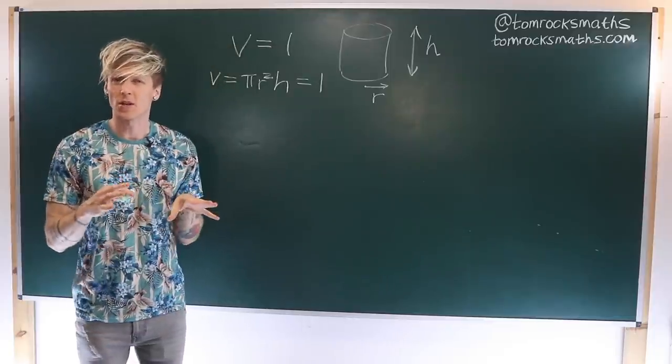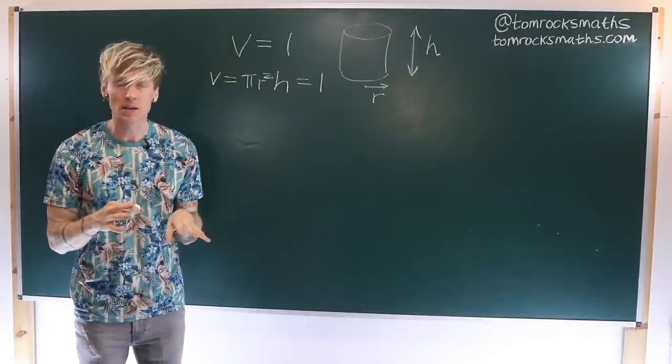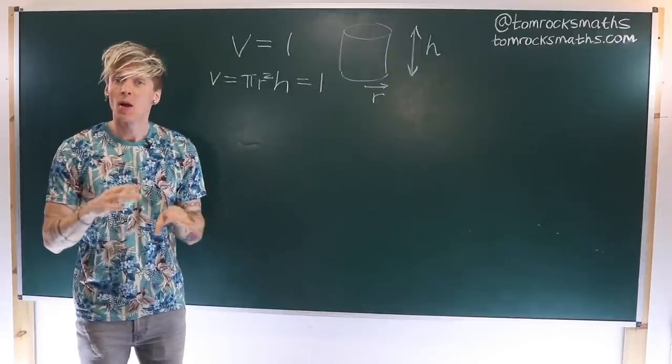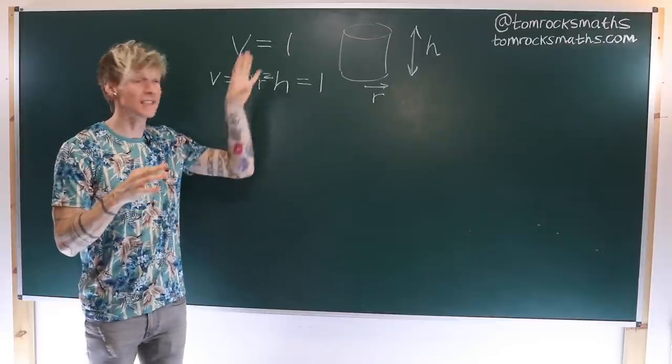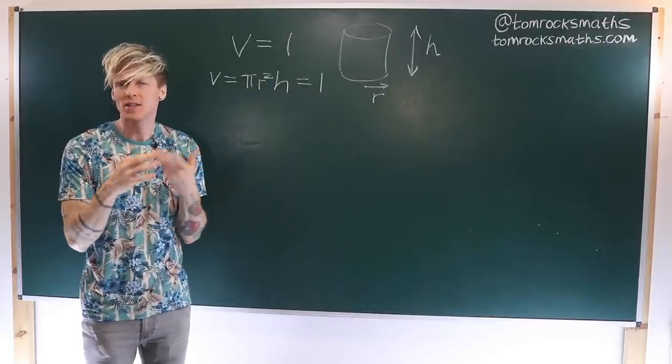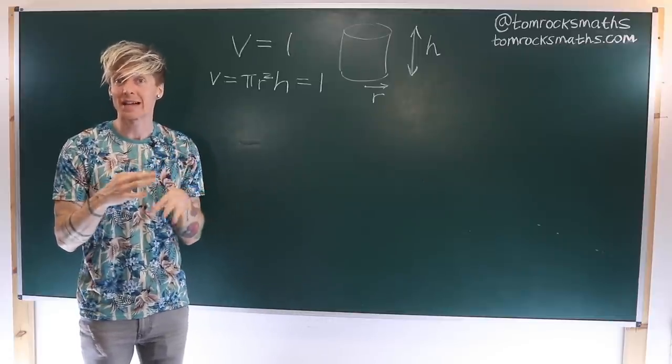Now the question wants us to minimize the material used to make the tin. So here that means the surface area, where we're going to assume it has zero thickness, or at least the same thickness regardless of the size of the tin. So ultimately it won't actually affect our answer.